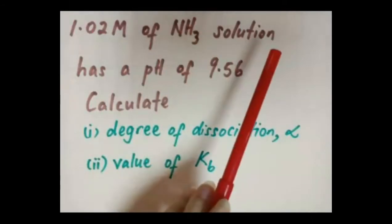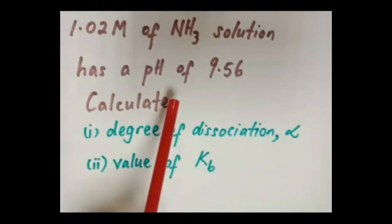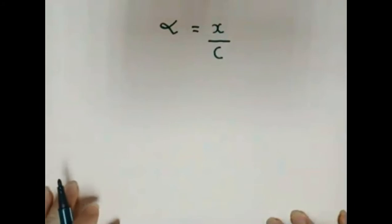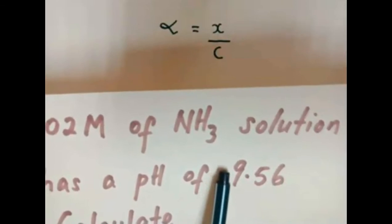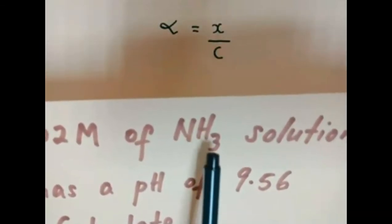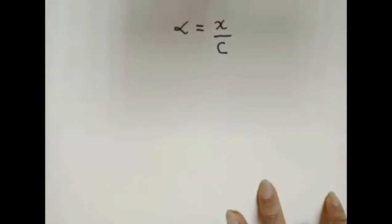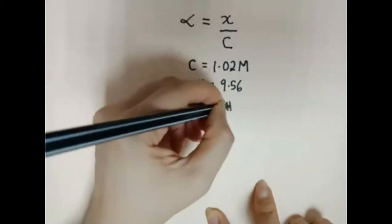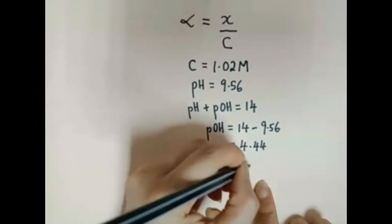Question: a 1.02 molar NH3 solution has a pH of 9.56. Calculate the degree of dissociation and the value of Kb. The degree of dissociation equals X over C, where X is the concentration of OH⁻ ions and C is the initial concentration of the NH3 solution.